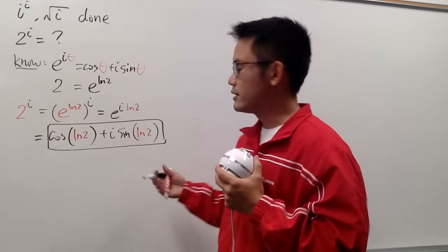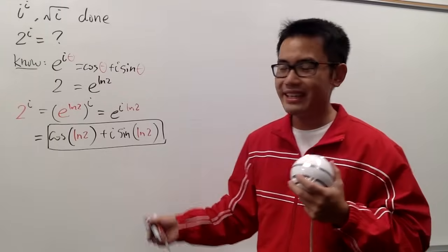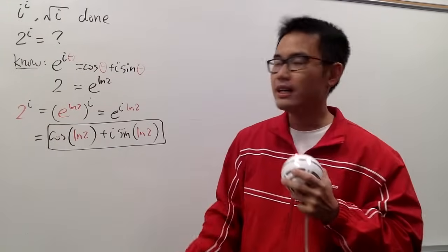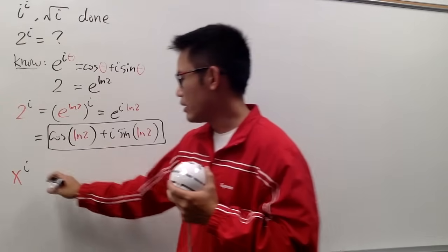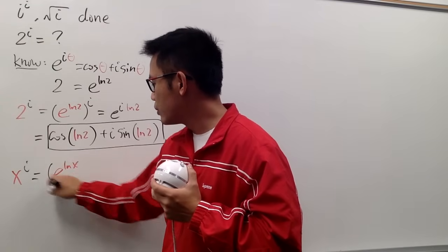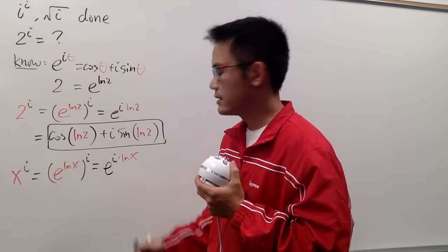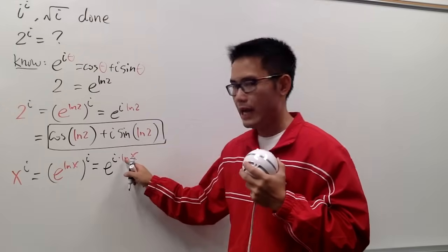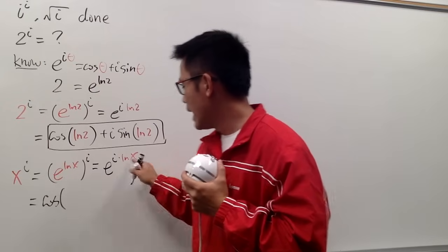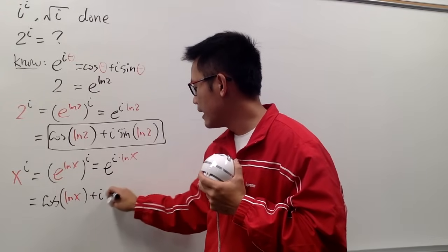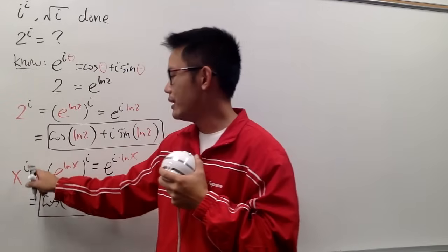It doesn't have to be just a 2 — it can be x. Based on this idea, we can write x to the i power. This is the same as e to the ln x raised to the i power, and of course we do the same thing: this is e to the i times ln x. We plug ln x into cosine and sine: this equals cosine of ln x plus i sine of ln x. This is the definition of x to the i power.